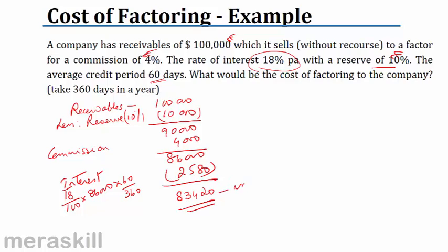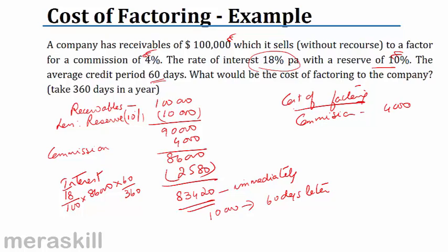And the net money that he will give me is therefore $83,420. I will get this immediately. The $10,000 I will get later, maybe 60 days later. So what is my cost of factoring? The cost of financing, the cost would be the commission of $4,000 and interest of $2,580, which is $6,580. This would be the cost of factoring.